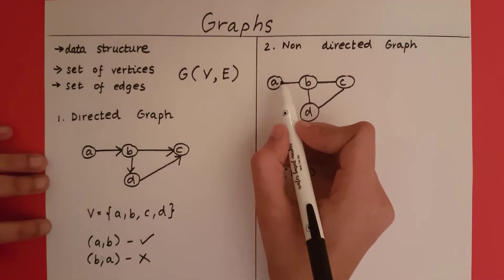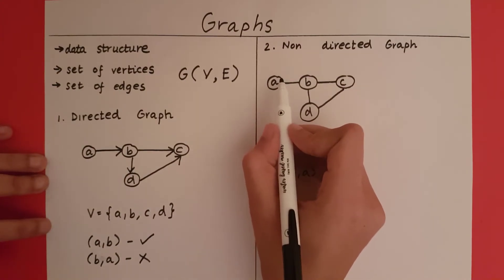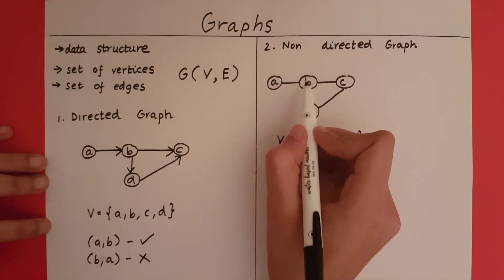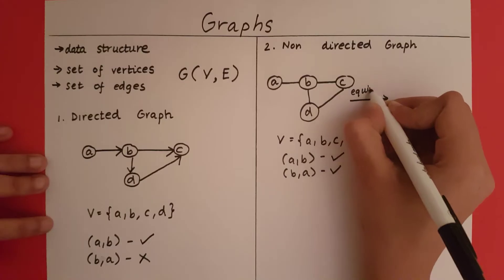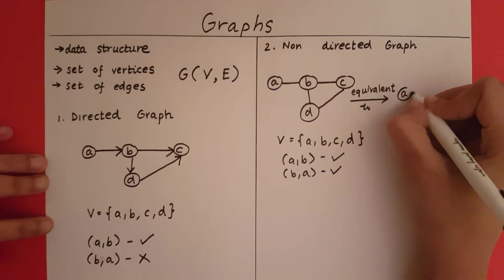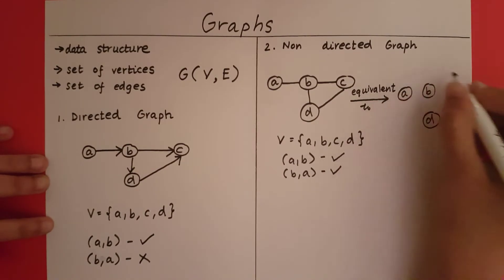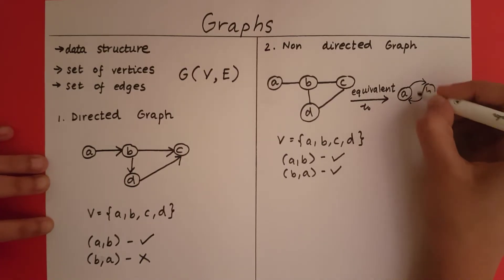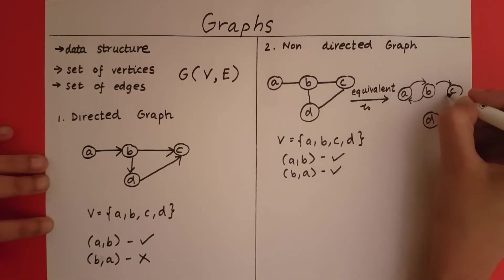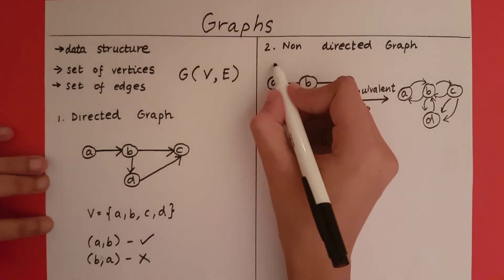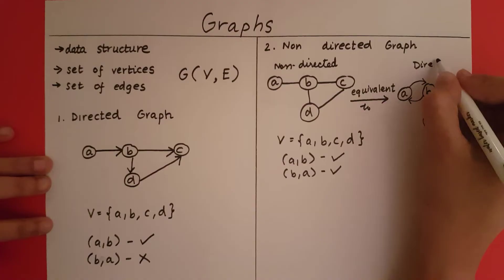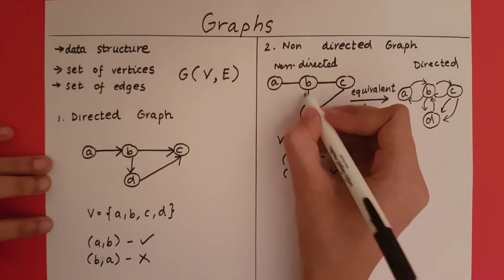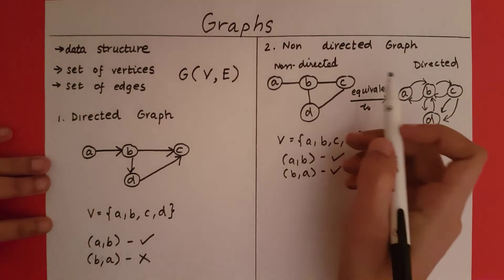So essentially, if I draw a line between A and B, that means there is an edge which goes from A to B and there also exists an edge which goes from B to A. So this non-directed graph is equivalent to a directed graph where for every edge, I add one to-edge and one from-edge. If you want to convert a non-directed graph to a directed graph, you need to replace all the non-directed edges with two equivalent directed edges.